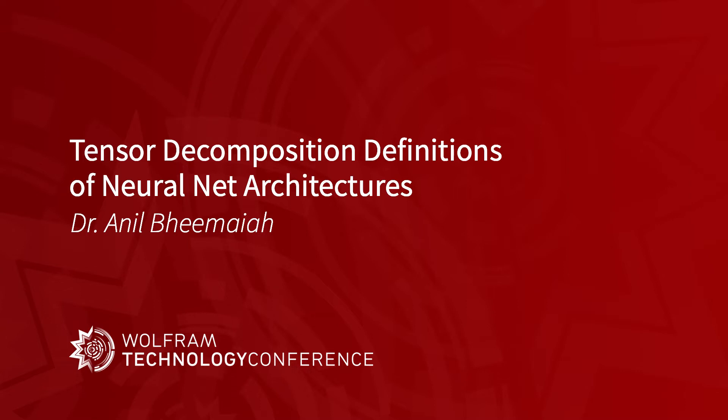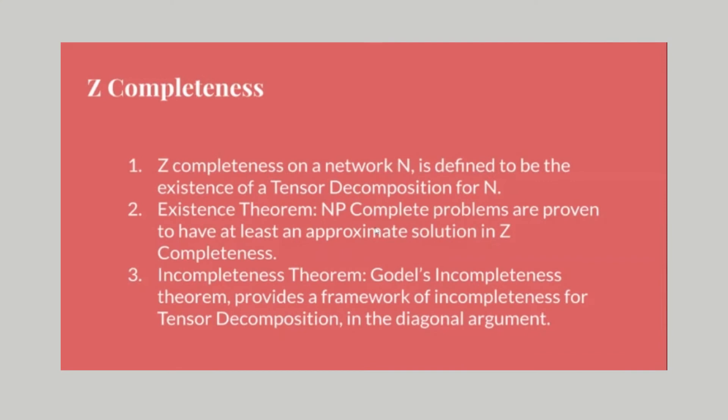This talk introduces complexity definitions for architectures in supervised and unsupervised learning, with radical complexity defined for both cognitive learning and machine learning models using continuous computable functions. It introduces the concept of C-completeness with an existence theorem and an incompleteness theorem. Z-completeness is defined as tensor compatibility with Gödel's provability.